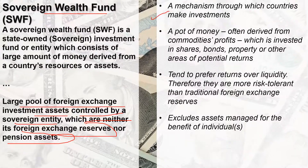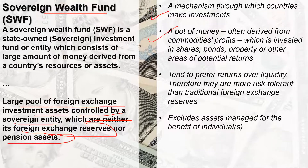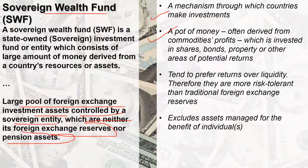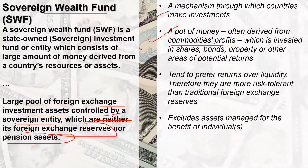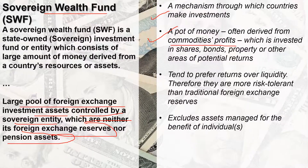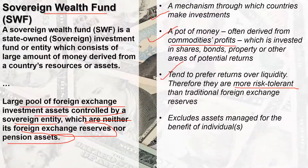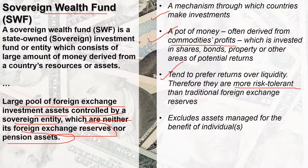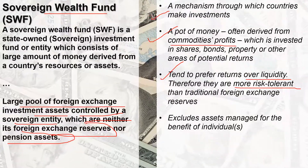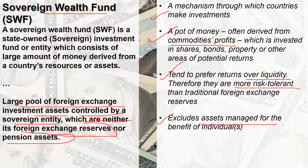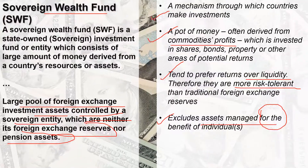Other features of SWFs include that it is a mechanism through which countries make investments, and it is a large pool of money which is often derived from commodities profits made by the country. They tend to invest for the longer term and hence are more risk tolerant compared to their preference for liquidity, and they exclude assets which are managed for the benefit of individuals.